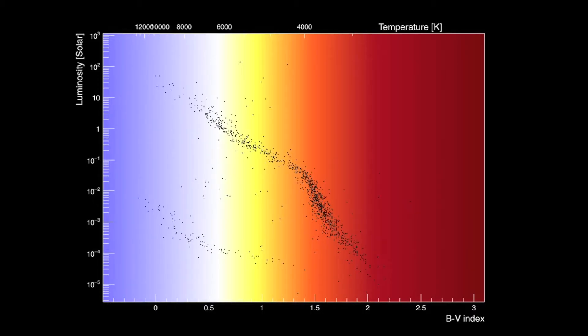You will see a diagonal line forming from low luminosity red stars to high luminosity blue stars. This is known as the main sequence, and it represents the normal, or stable, configuration of the star.